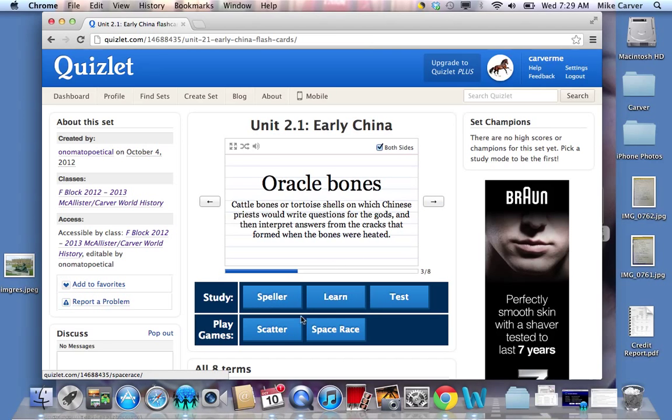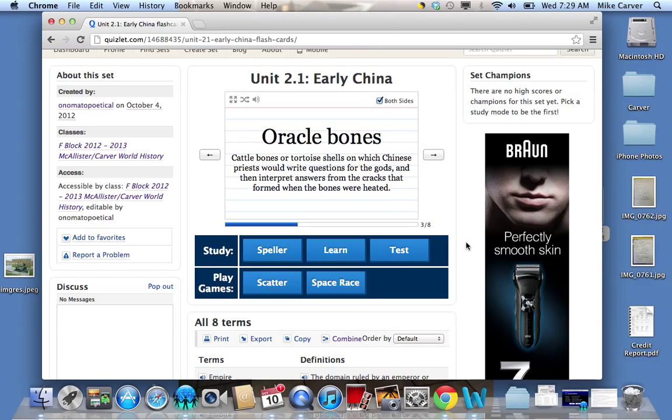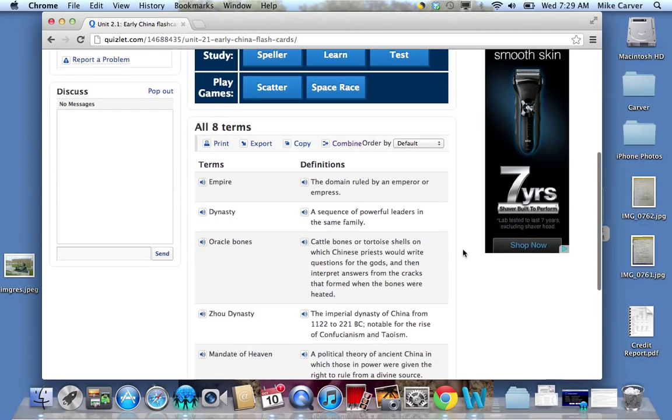And you can use these tools with any set of flashcards. Speller, Learn, Test, Games or Scatter and Space Race. I hope you've checked those all out. But that's only going to use that one set of cards. I need to put two sets of cards together. So I'm going to scroll down. Here's my list with the definitions. I want to click Combine.